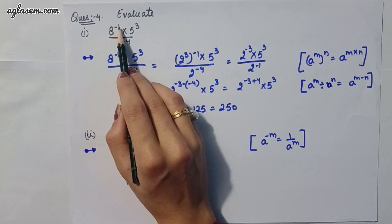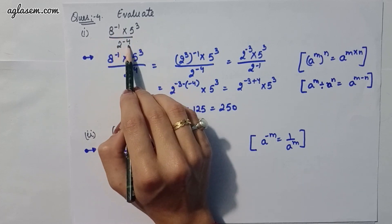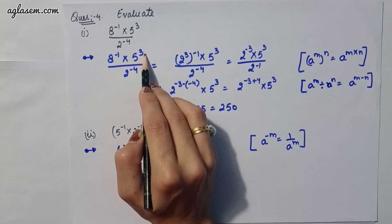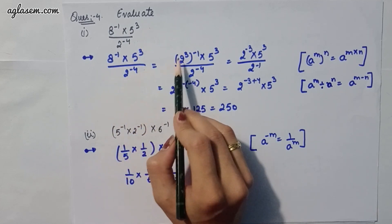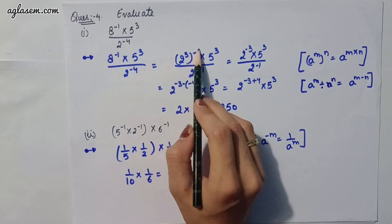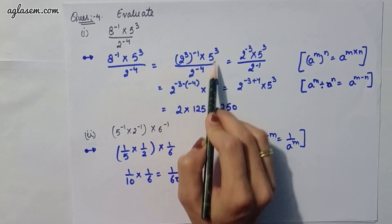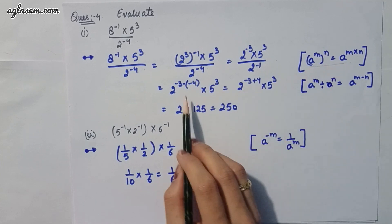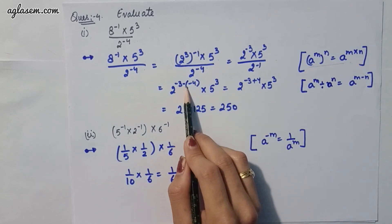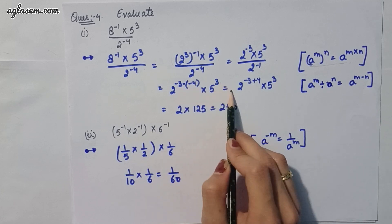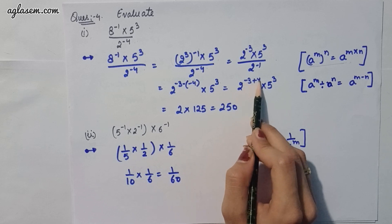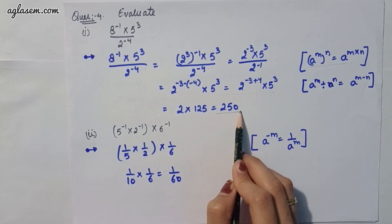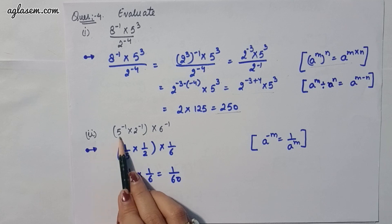Moving to the fourth question: evaluate. Part 1 is 8^(-1) × 5^3 divided by 2^(-4). We express 8 as 2^3, then apply the formula a^m / a^n = a^(m-n): 2^(-3) / 2^(-4) = 2^(-3+4) = 2^1. Multiplying by 5^3 gives the answer 250.